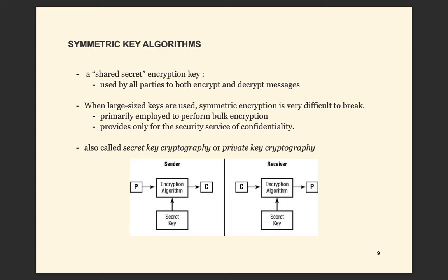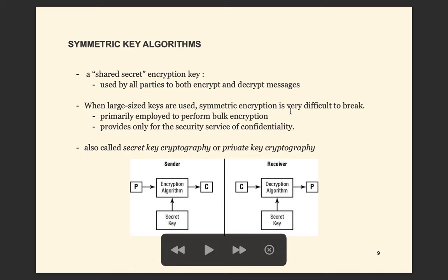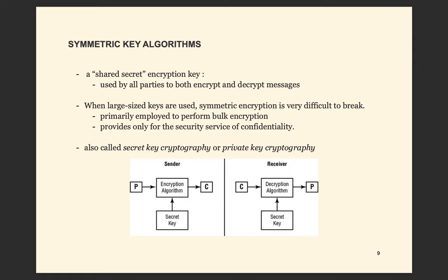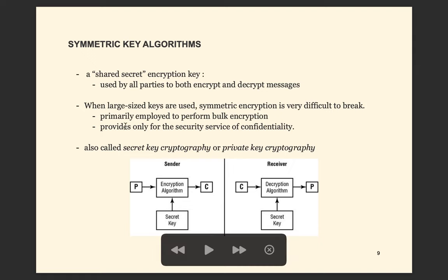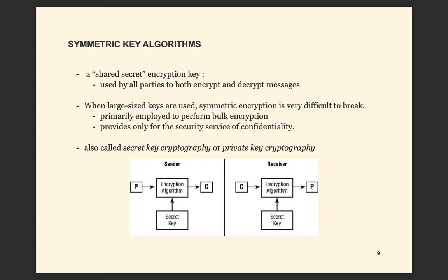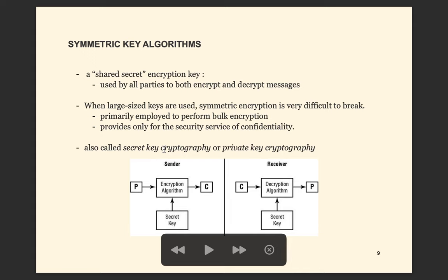The symmetric key algorithm is usually used to perform encryption of large amounts of data because it's fast. It only provides confidentiality — it doesn't tell you who sent the message, but it just hides the content. The symmetric key algorithm is sometimes called secret key cryptography because the key should be kept secret, or private key cryptography because the key should be kept private.